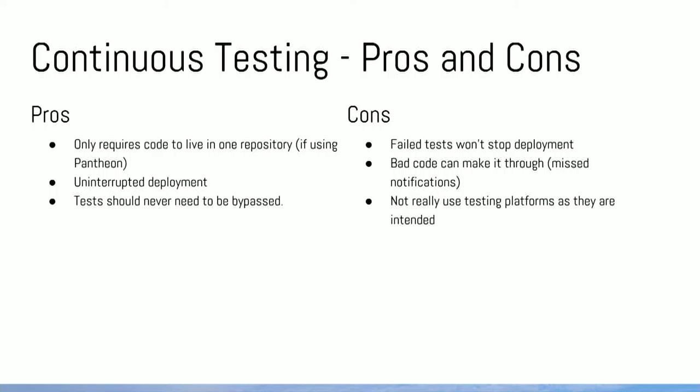Pros and cons of continuous testing. Pros: only requires code to live on one repository — a big one for us. I personally didn't like code living in both Bitbucket and Pantheon. Uninterrupted deployment: if you're in a hurry and just want to get things onto Pantheon to show a client, it goes straight through, and because of this, tests never need to be bypassed. Cons: failed tests won't stop deployment, so bad code can make it through more easily — it's not a foolproof gate. It's more of a notification that your codebase is going okay. It's also not really using testing platforms as they're intended — it's kind of a hack we came up with to be useful for Pantheon.